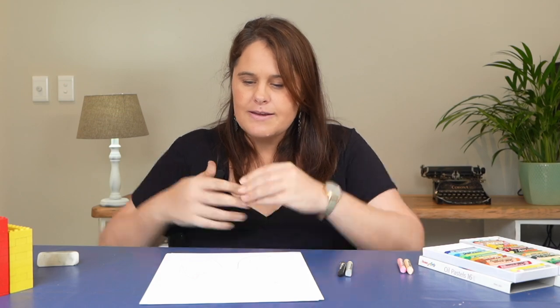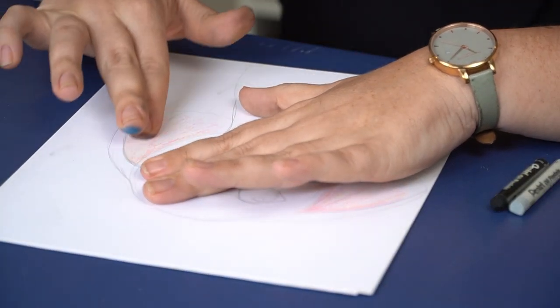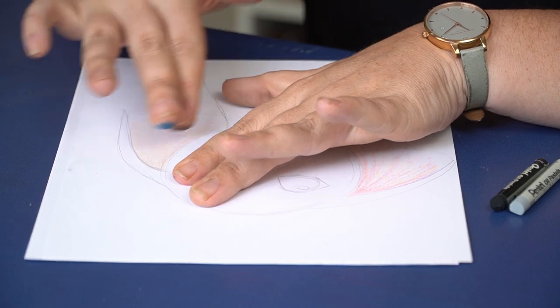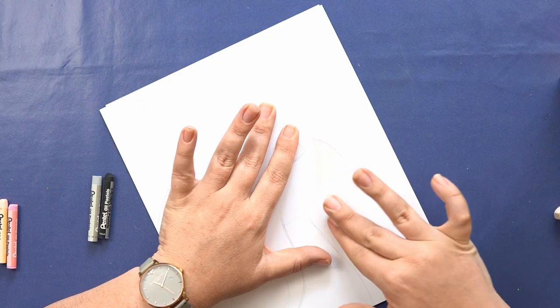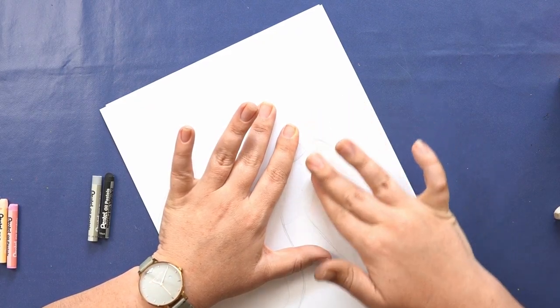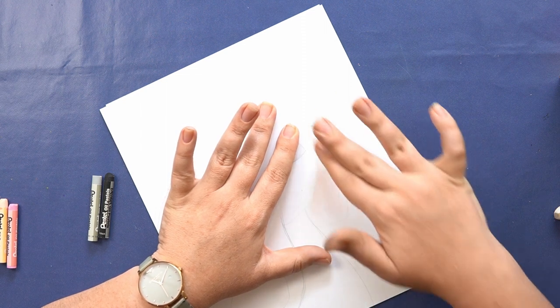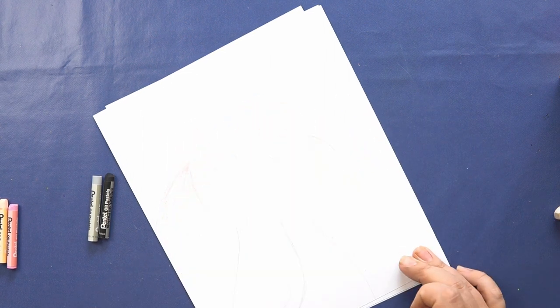To blend this we're just going to start from the top corner and pull our finger down with a nice clean finger, all the way down to the bottom of the ear. It will fade down to almost white by the time it gets to the bottom of the ear.